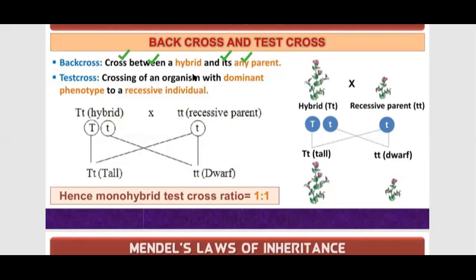Test cross is crossing an organism with the dominant phenotype to a recessive individual. In the test cross, we cross the dominant phenotype to a recessive individual. We cross the offspring to a recessive individual. If we cross the offspring with any parent, then that is a test cross. If we cross the offspring with any parent, then that is a back cross.